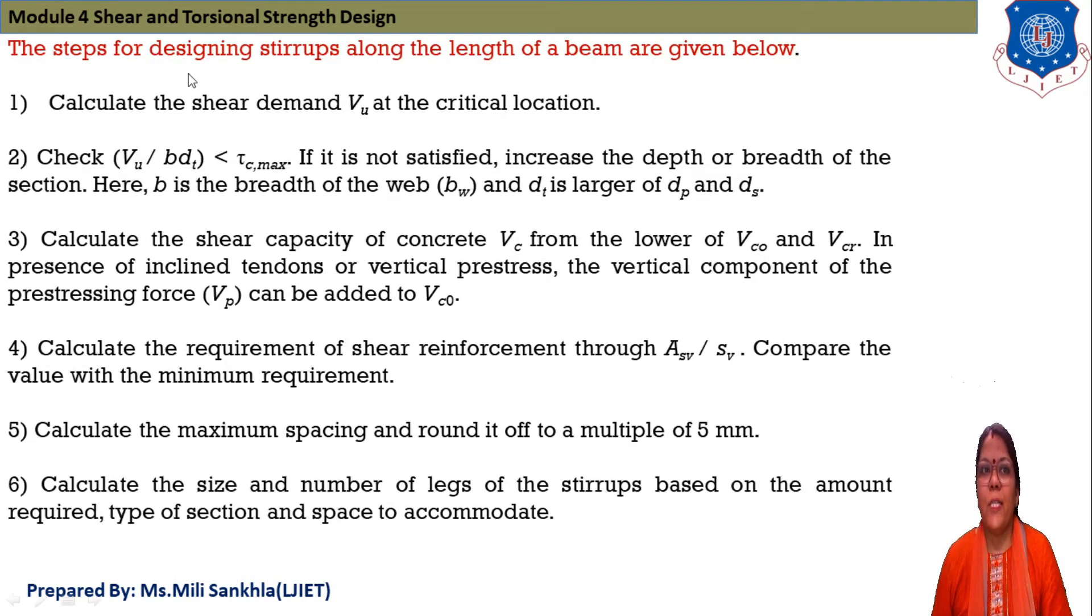One by one, steps for designing of stirrups along the length of beam. First, we calculate the shear demand that is VU at critical section and check VU divided by BDT less than tau C maximum. If it is not satisfied, increase the depth or width of section. B is the width of web that is BW and DT is the larger of DP and DS that we discussed in previous lecture.